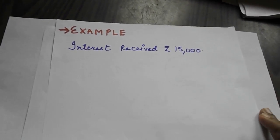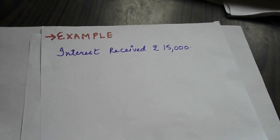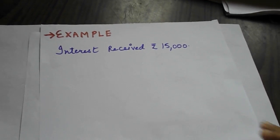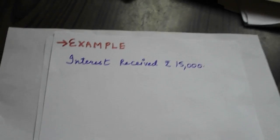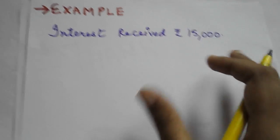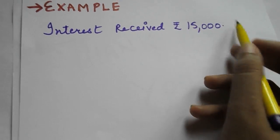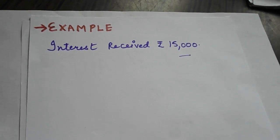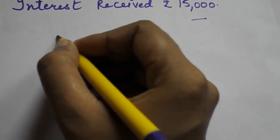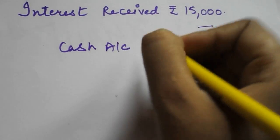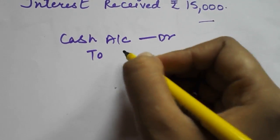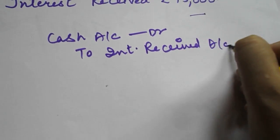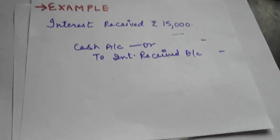Another example: Interest received. Interest received means you have received something, so it is your income. According to the rule, you will credit your income. You are receiving cash, so cash is coming into your business. The entry becomes: Cash Account Debit, To Interest Received Account, Rs. 15,000.